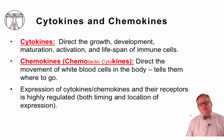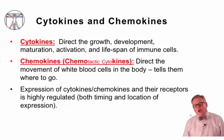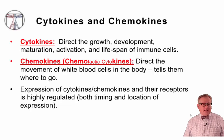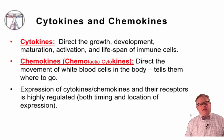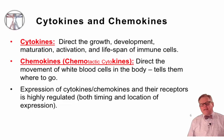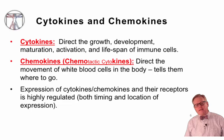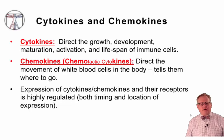What's the difference between cytokines and chemokines? Cytokines direct the growth, development, maturation, activation, and the lifespan of immune cells, whereas chemokines — which were called chemokines because they're chemotactic cytokines — direct the movement of white blood cells in the body. These chemokines tell white blood cells where they should go. The expression of cytokines and chemokines and their receptors is highly regulated, and some are expressed on T cells and some on B cells, which dictates how the cells respond to these various signals.